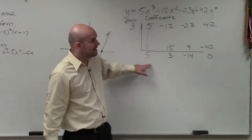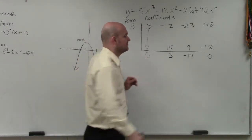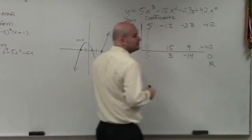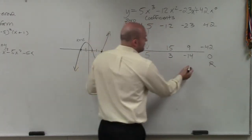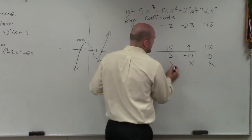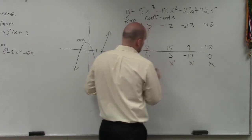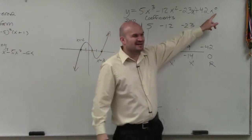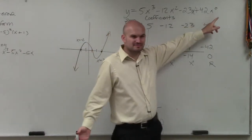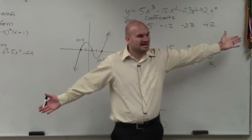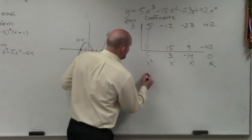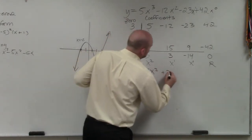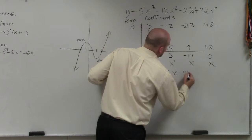Now we need to write this as our polynomial. The last value is always your remainder. Then it's basically x to the 0, x to the first, x squared. In reality, do we really write x to the 0? No, we just call that our constant. So in reality, we have 5x squared plus 3x minus 14.